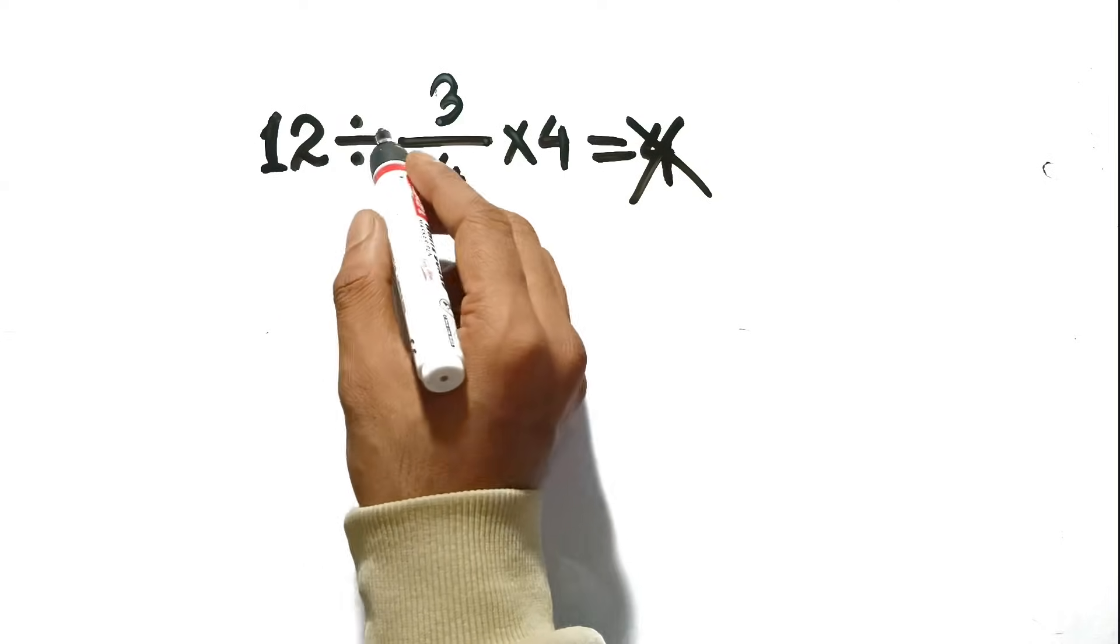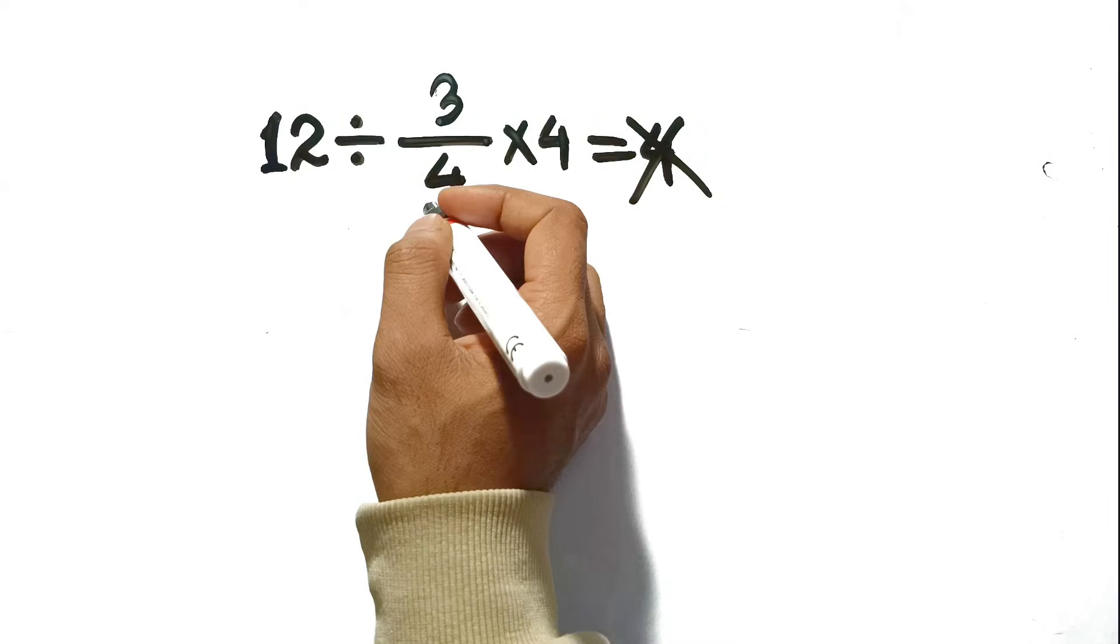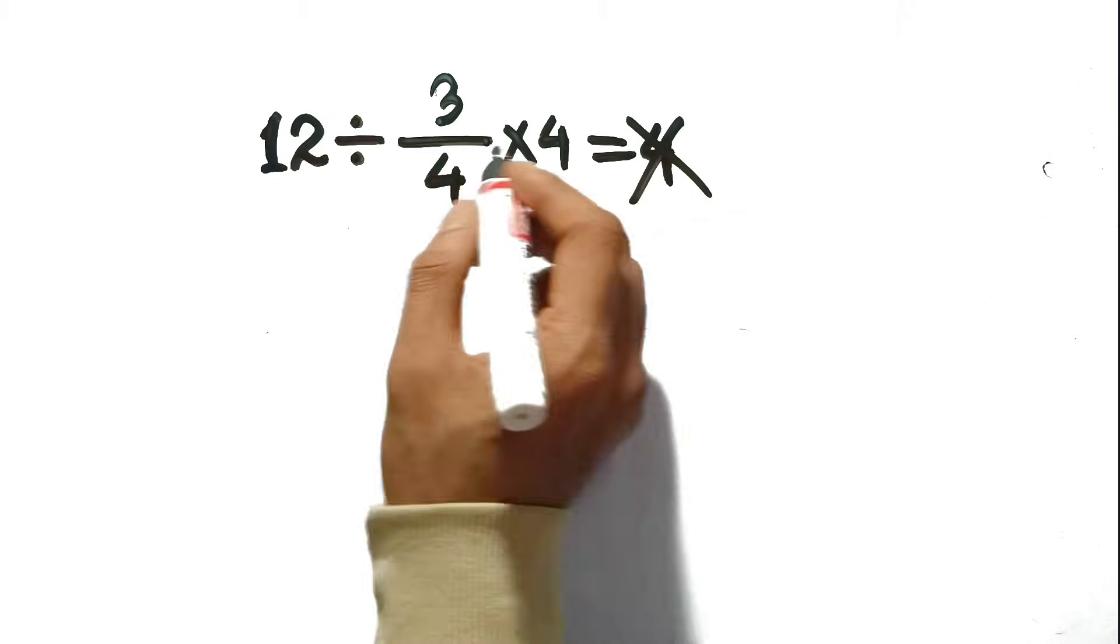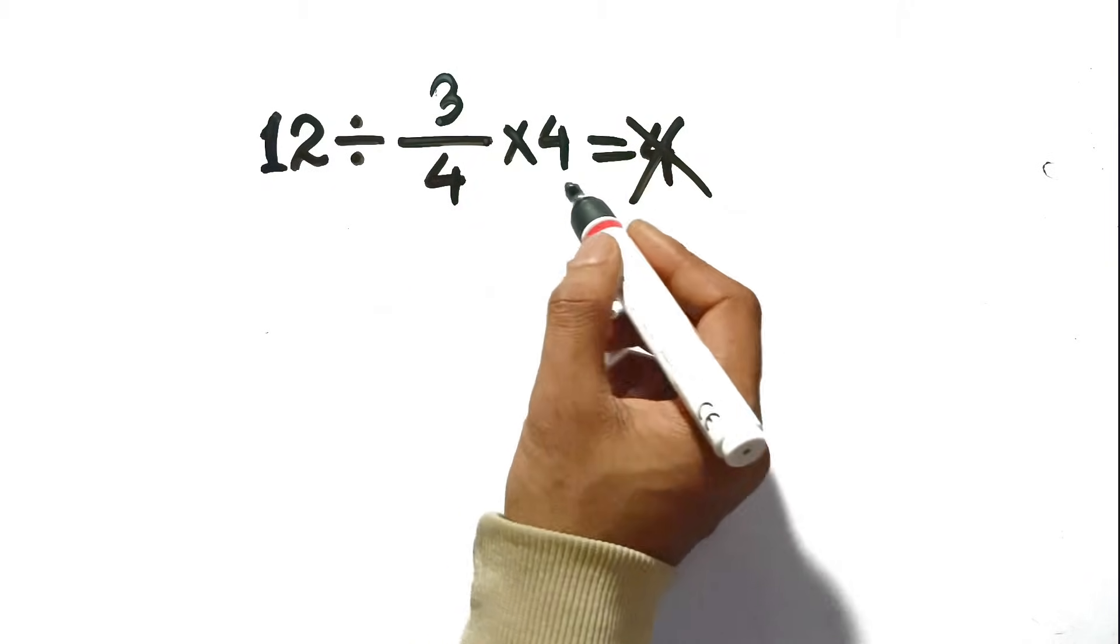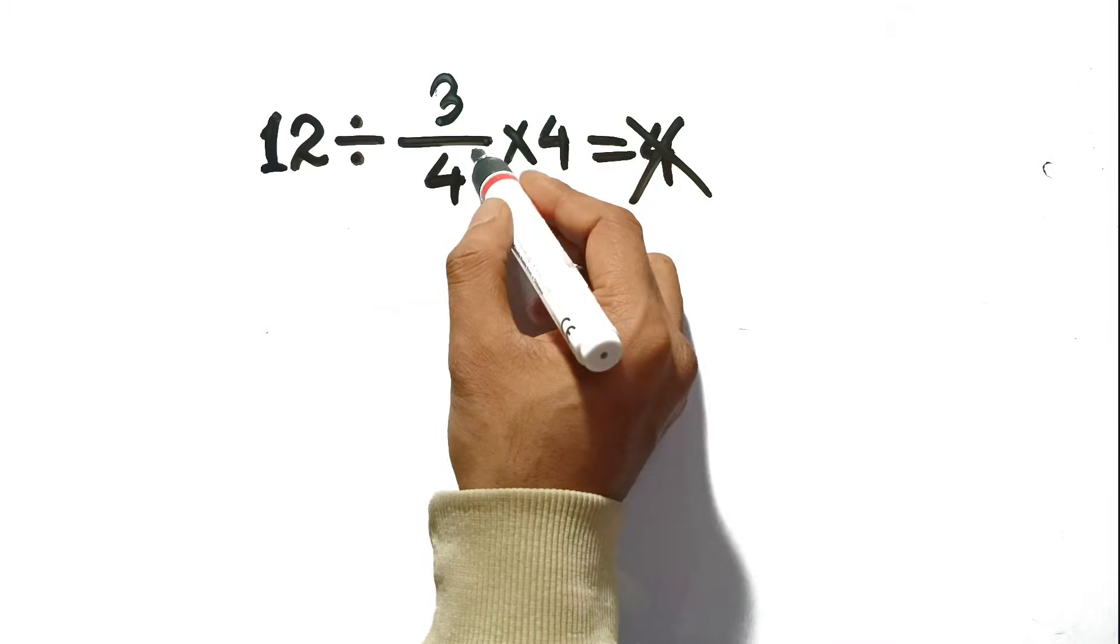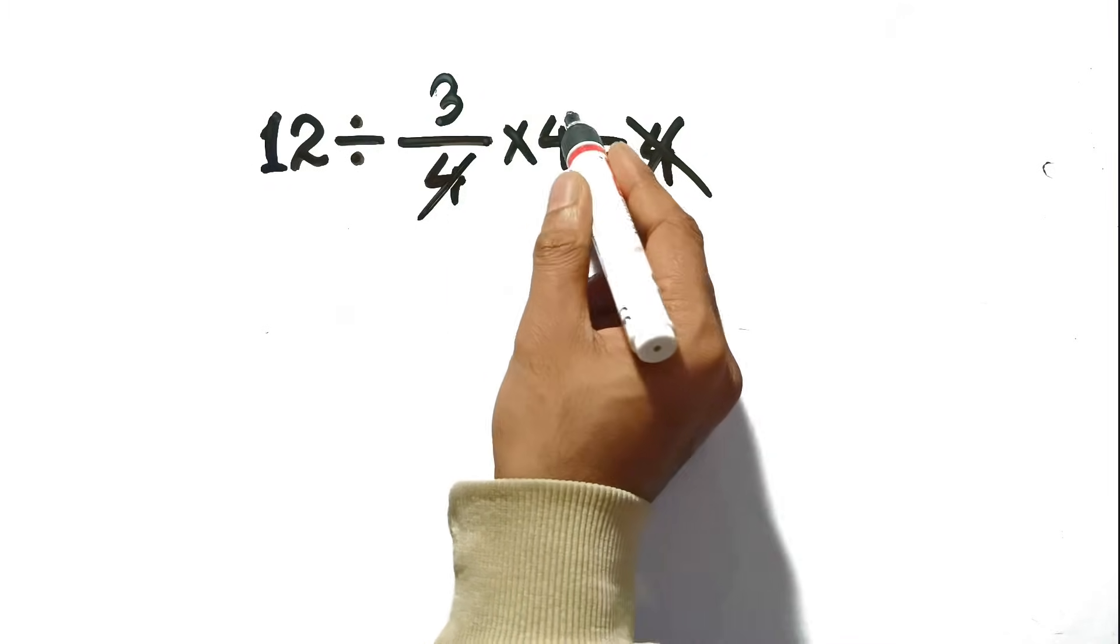When you look at 12 divided by 3 fourths times 4, your brain instantly spots a shortcut. You see that 4 at the bottom of the fraction, and you see the whole number 4 on the right side, and basic algebra tells us, hey, if you have a 4 on the bottom and a 4 on the top, they cancel each other out, right?